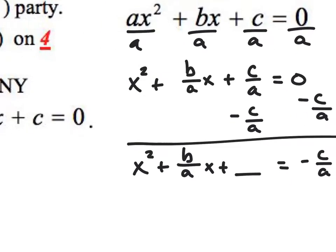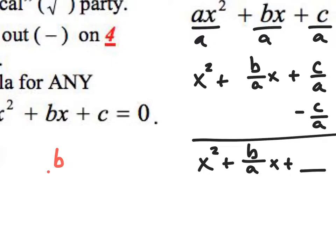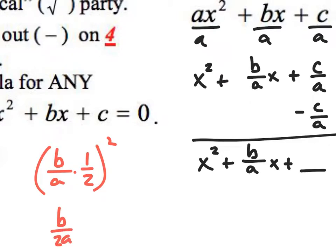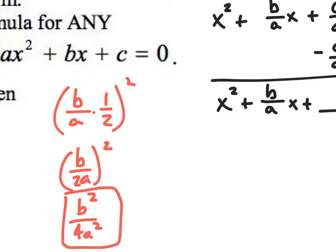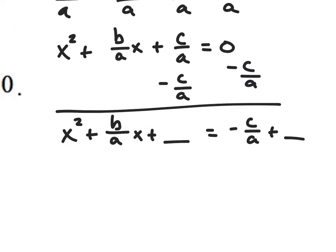What's going to go in the blank — I'm going to take b over a and divide it by 2. Instead of dividing by 2, I'm going to multiply it by one half, and then square it. So what I'm going to get is b over 2a, that whole thing, squared. And when I have b over 2a squared, I'm going to get b squared over 4a squared — by taking 2 and squaring it and then taking a and squaring it.